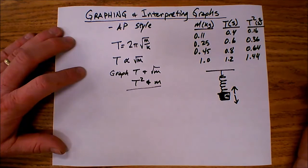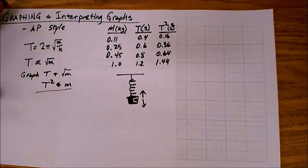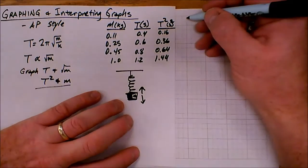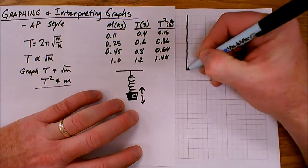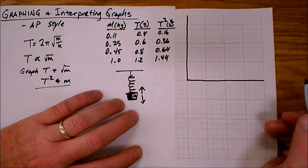I'm now ready to create my graph. So to create my graph, I'm going to first draw some axes. So let me grab some graph paper. All right, so I've got some graph paper. I'm going to first draw my axes, like so. I'm going to label my axes.